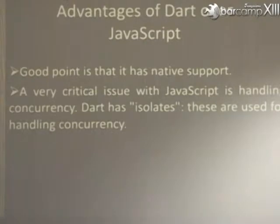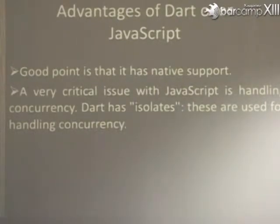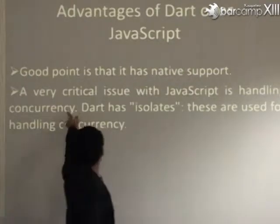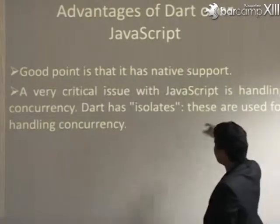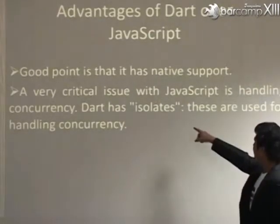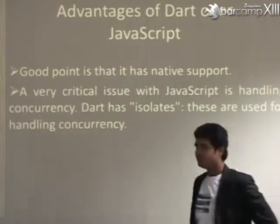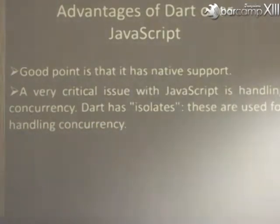Native support is also a very important factor for a language, and Dart has very strong native support. A very critical issue with JavaScript is handling concurrency. Dart has isolates, and using isolates you can easily handle the concurrency problem.